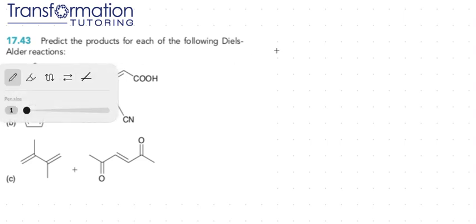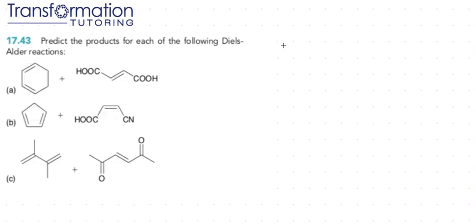First, we must know what a Diels-Alder reaction is. A Diels-Alder reaction consists of two molecules. The first molecule is called the diene, and it has a double-single-double bond. This molecule can have other groups attached to it; it can be part of a ring and so on. But as long as you have a double-single-double bond, you have your diene.